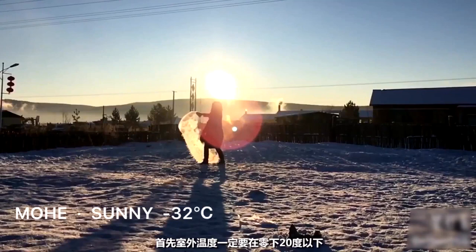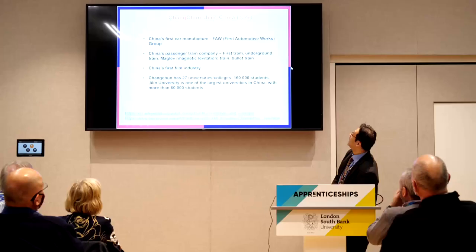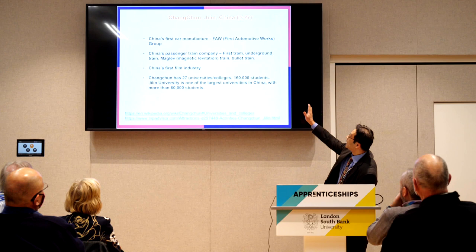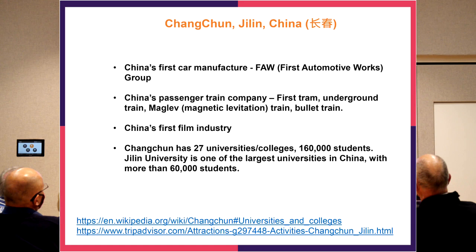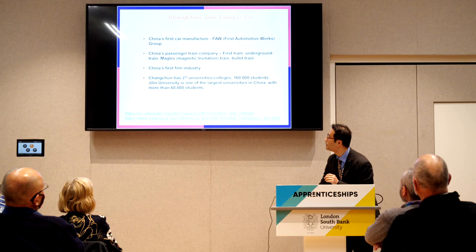This is a spectacular thing you can do. Changchun is also the city where the first car manufacturer group was established, and the first passenger train. China is famous for its high-speed bullet trains, and about 50% of them were manufactured in Changchun. Changchun also had the first movie makers and has 27 universities, the largest being Jilin University, which merged with five others and has more than 60,000 students.